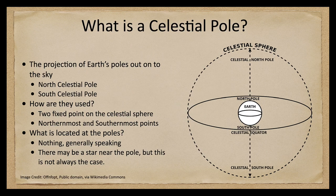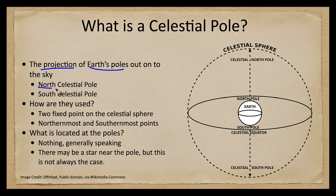So what are the celestial poles? There are actually two of these, and simply they are the extension or the projection of the Earth's poles out onto the sky. So imagine the Earth's North Pole — if you project that out, straight up, where it reaches the sky will be the North Celestial Pole in the Northern Hemisphere. And if you imagine the South Pole, you will reach the South Celestial Pole.